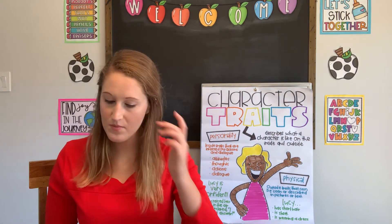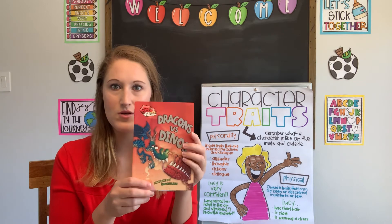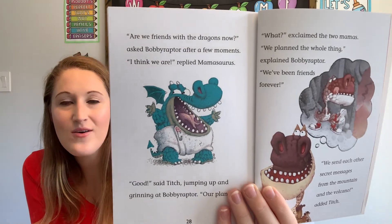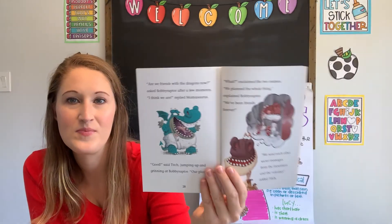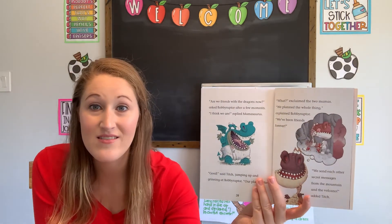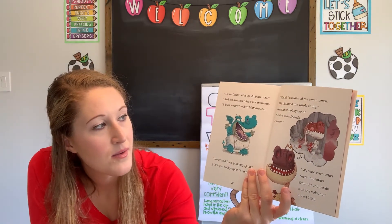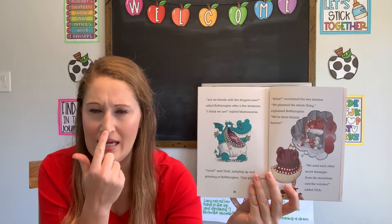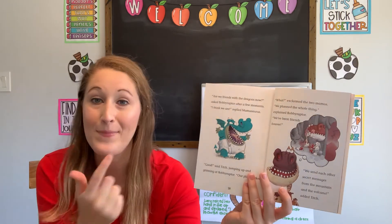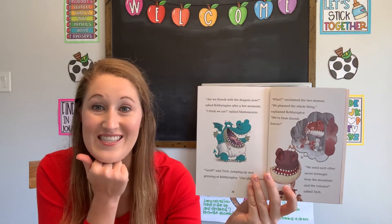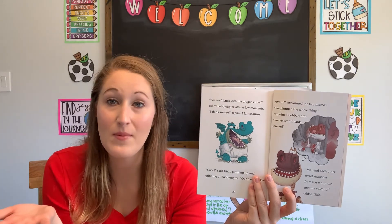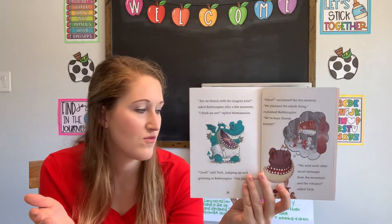Let's try another one: Dragons vs. Dinos. Look at this dinosaur. How could you describe that dinosaur? He's blue, he's big, kind of large. He's wearing a diaper, so he might be a little stinky. He's happy — we can see that from the smile on his face. Maybe he's a baby, so we can describe his age — he's wearing that diaper.